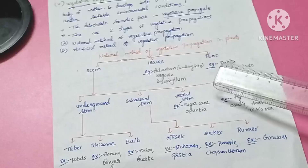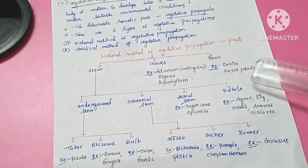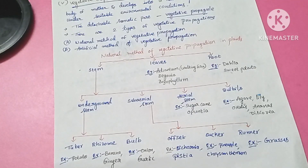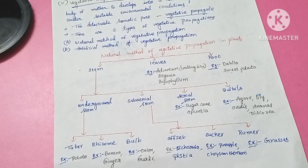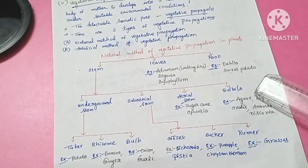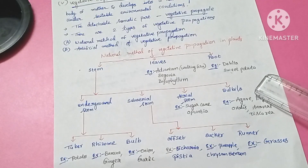Aerial stems include bulbils. Examples include agave, lily, oxalis, and Dioscorea. Bulbils are large-sized structures meant for vegetative propagation. They are detached and placed in soil to develop new plants. In the agave plant, bulbils are modified floral buds developed on the floral axis.